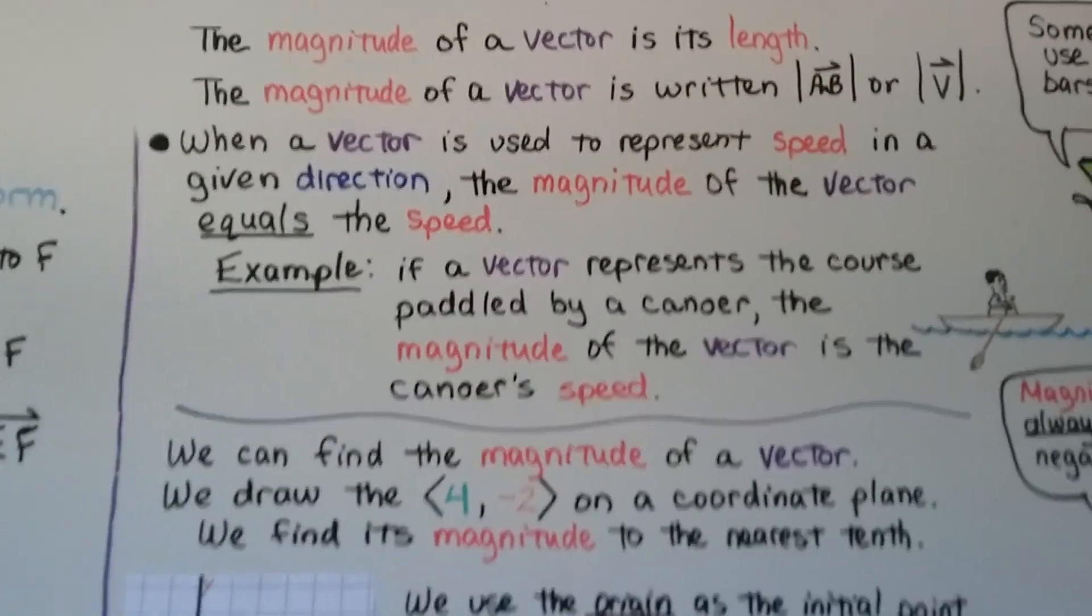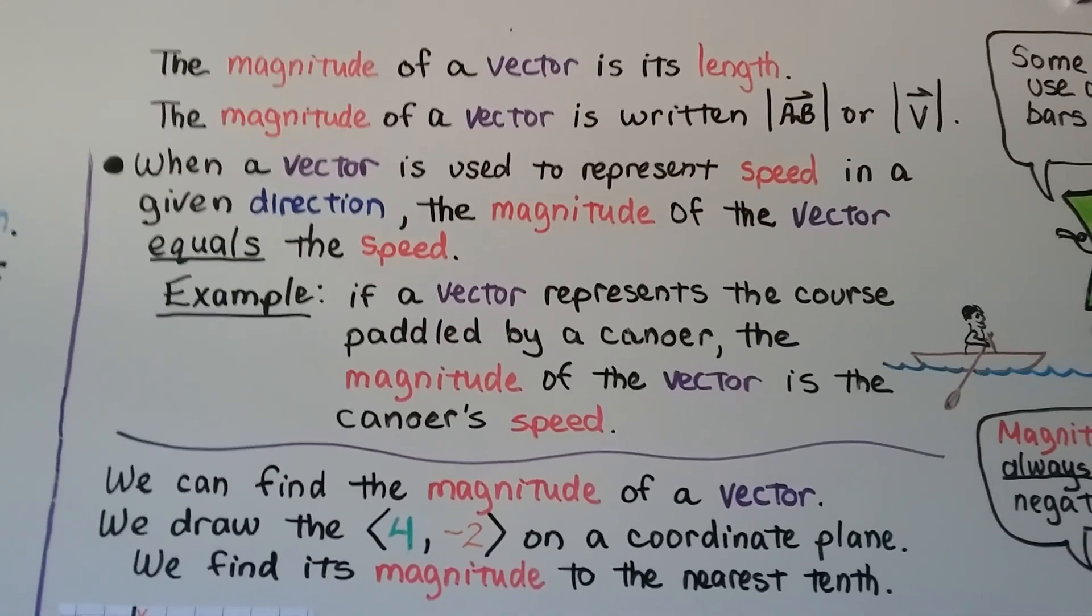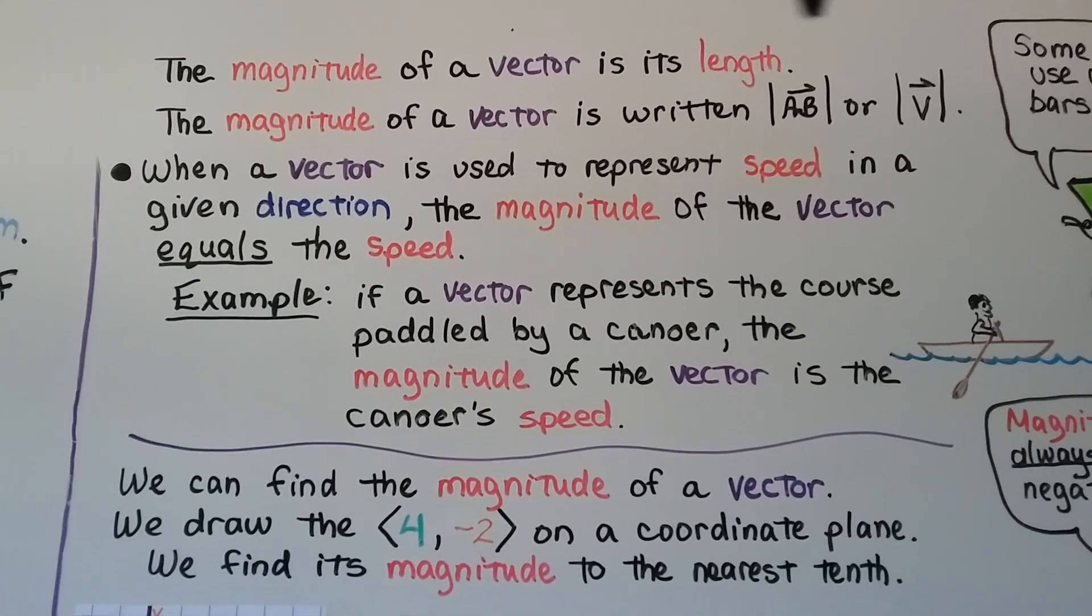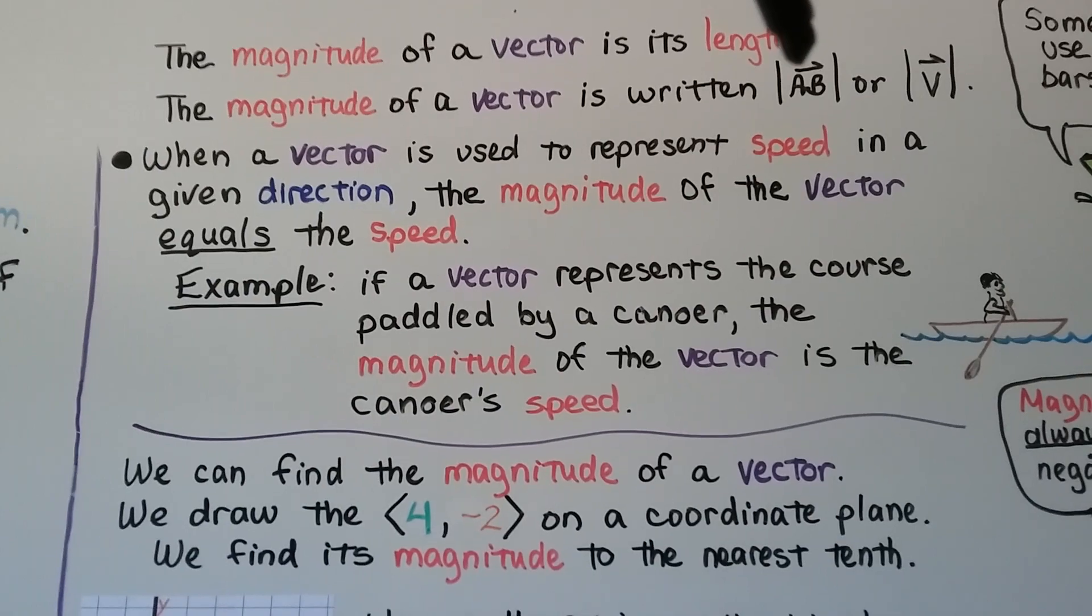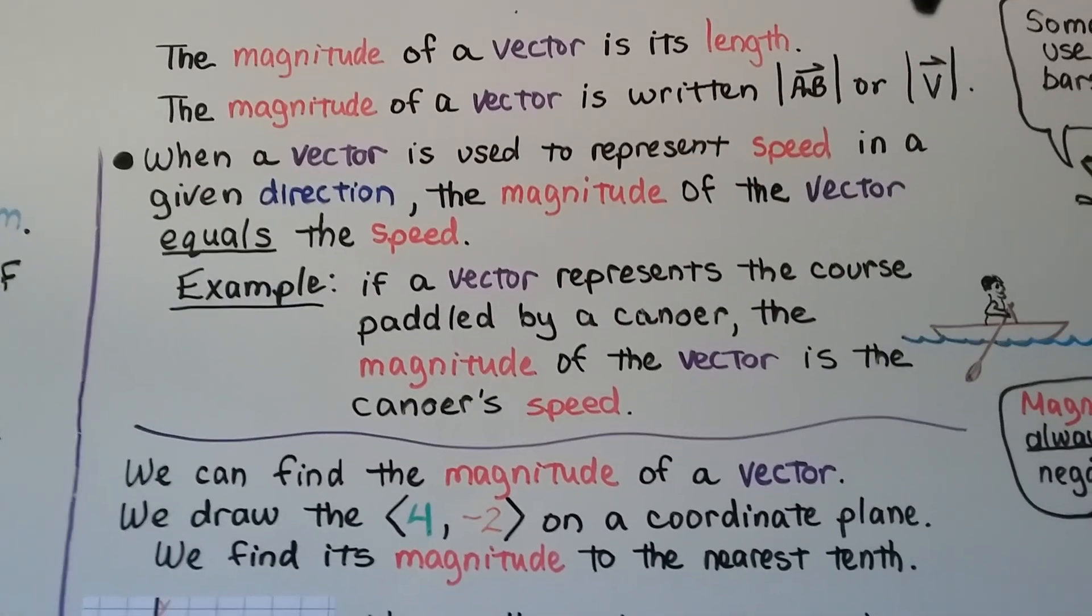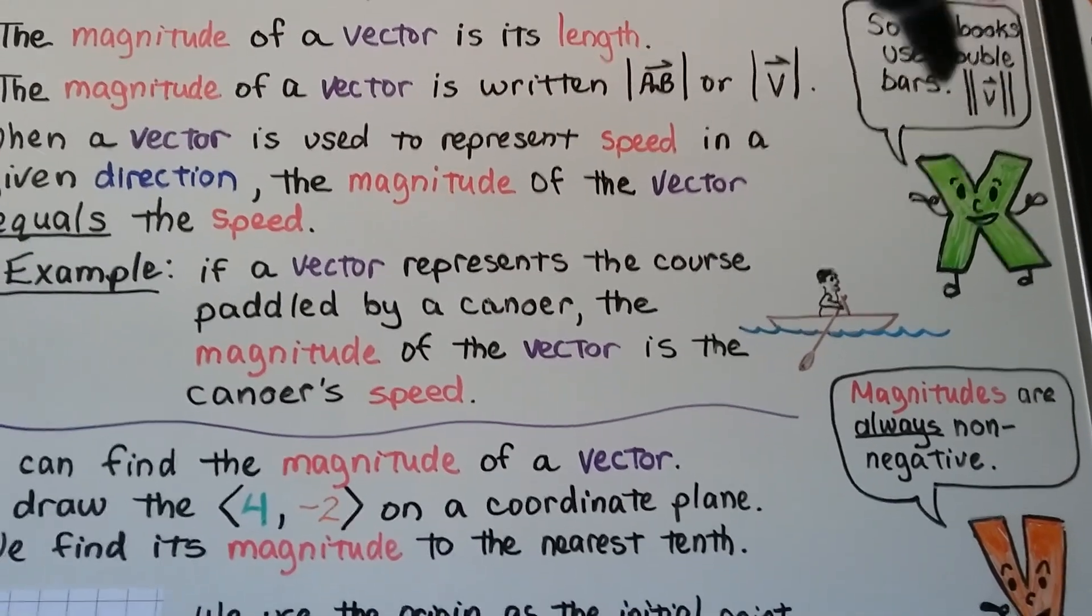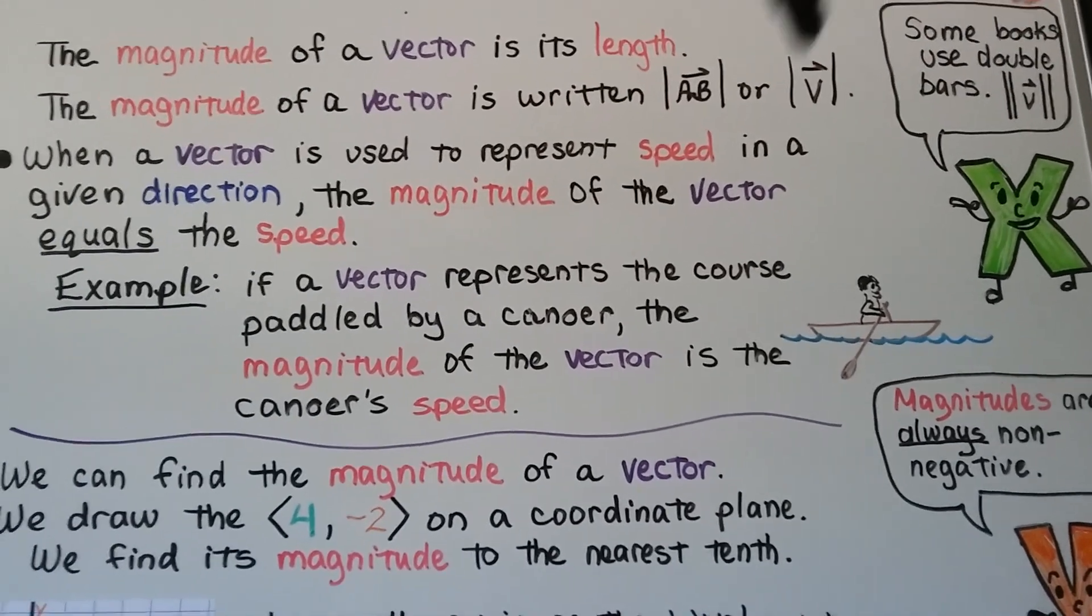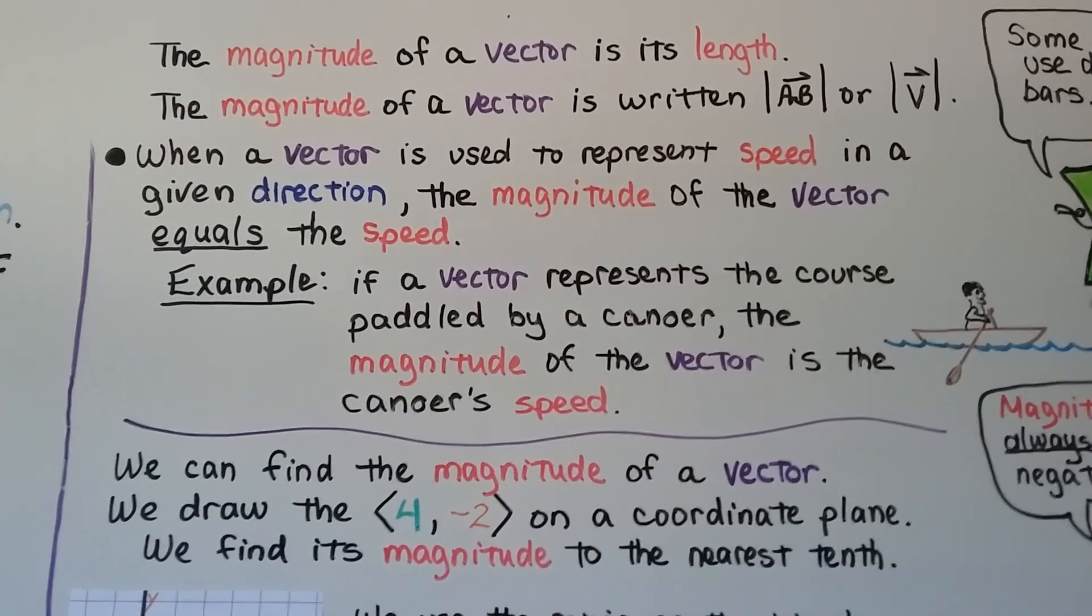And the magnitude of a vector is its length. So the magnitude of a vector is written like this. It looks like absolute value bars. So that would be the magnitude of vector AB. This would be the magnitude of vector V. Now, some books and teachers use double bars for magnitude because they don't want you to confuse it with absolute value. So you might see it with double bars.